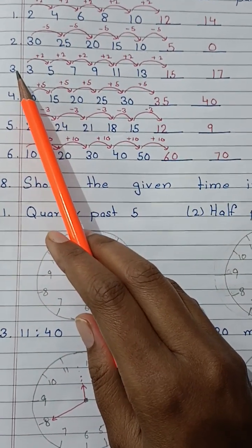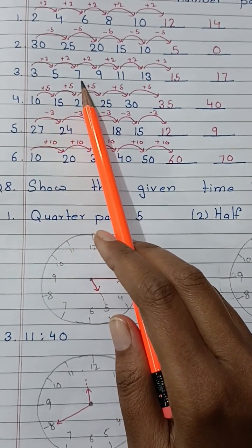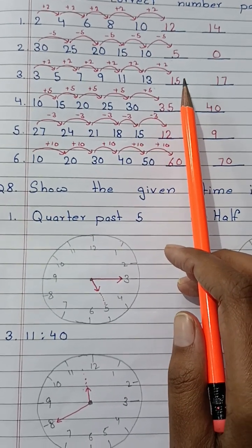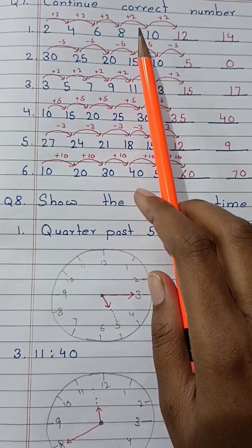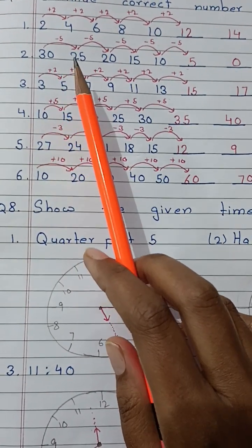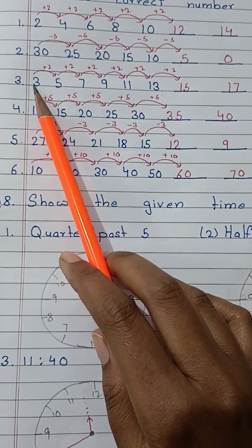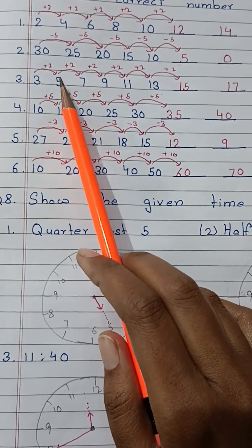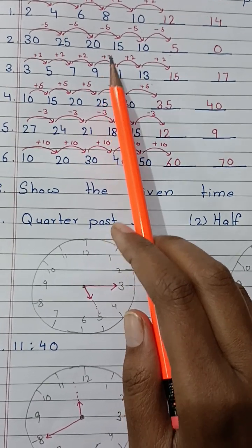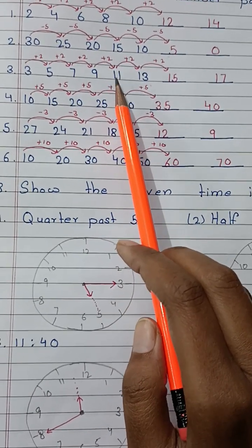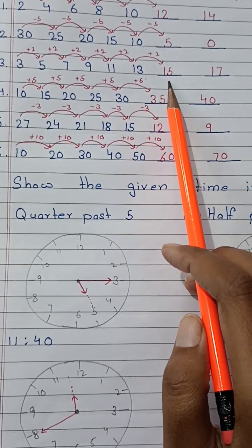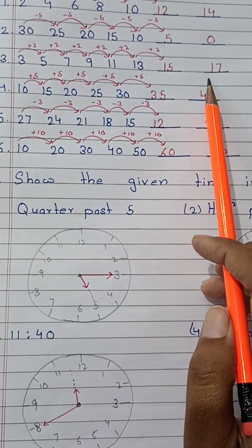In the third question, the series is 3, 5, 7, 9, 11, 13. We will have to continue the series after 13. Similarly, as in the first question, each number is being added 2 to make the next number. So 3 plus 2 is 5, 5 plus 2 is 7, 7 plus 2 is 9, 9 plus 2 is 11, 11 plus 2 is 13. So the next number will be 13 plus 2 is equal to 15, and 15 plus 2 is equal to 17.